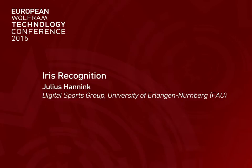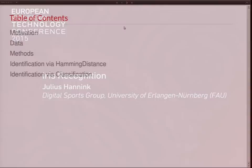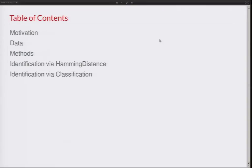Let's dive straight in. The table of contents for today: we'll look at the motivation for why do iris recognition, then I'll quickly explain the dataset I use, then go over the methods of how to actually do iris recognition, and then we have two identification schemes — one via the Hamming distance and one via a classification approach.